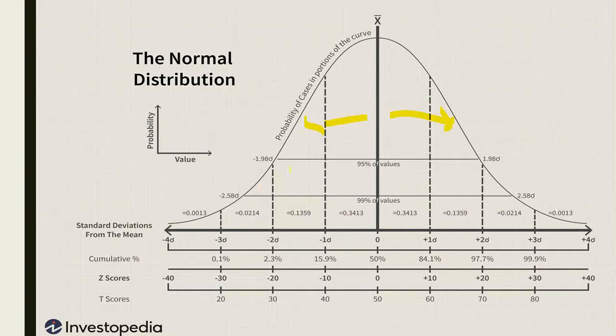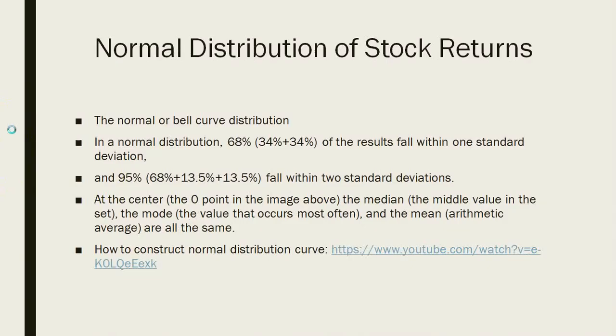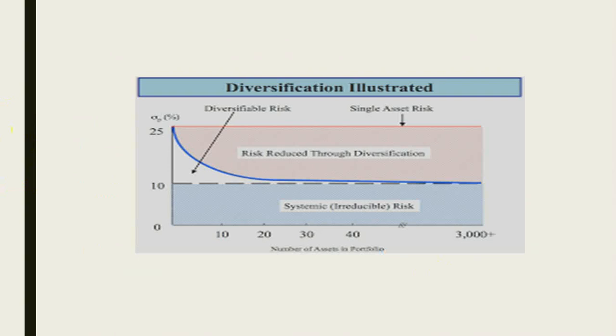When returns are normally distributed, there is no room for skewness and kurtosis. Since there are four moments of statistics, we are left with only two: mean and variance (or standard deviation). In finance, risk is defined only in terms of variance and return is defined by the first moment, the mean. Then the risk-return relationship and efficient frontier are developed with risk on the x-axis and return on the y-axis.